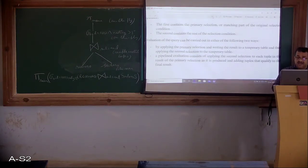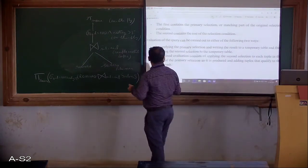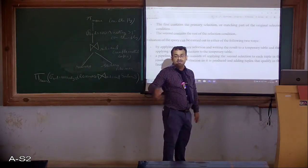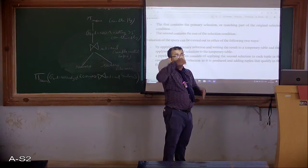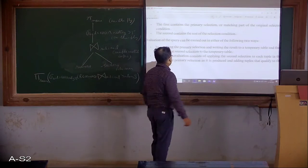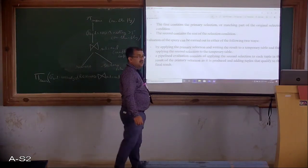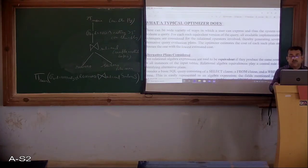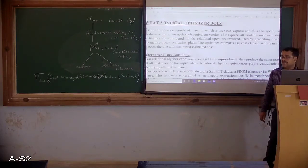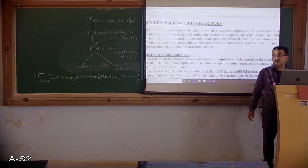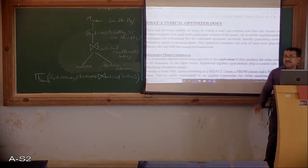Applying the selection on results using a temporary table is inefficient because for every operation you have to generate a temporary table, which is then taken as input by the above operator, increasing overhead. We can use the on-the-fly pipeline approach instead. A typical optimizer generates different alternative plans for execution of the query and finds the one with the lowest estimated cost as the preferred plan. The number of alternative plans considered can be enormous, so it selects a subset and from there identifies one execution plan.